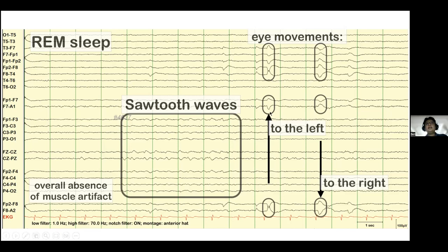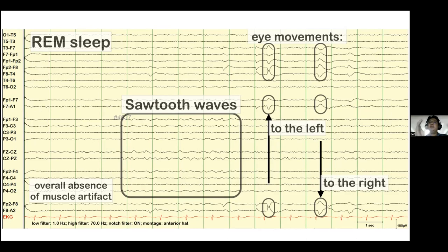Why is it important to know the awake, drowsy, and sleep states? If you fail to recognize a sleep stage, you may mistakenly take a sleep transient as an epileptic discharge. That is why the very basic of EEG interpretation is knowing the state: awake, drowsy, or sleep.